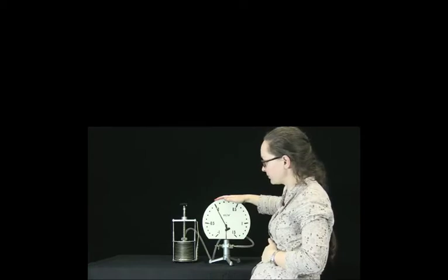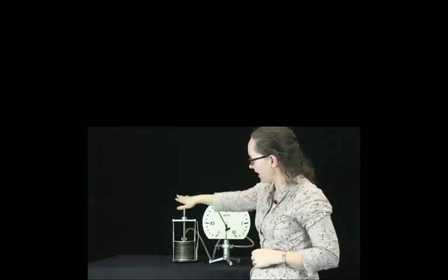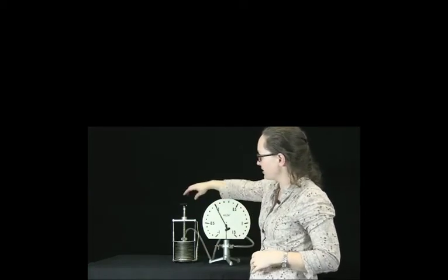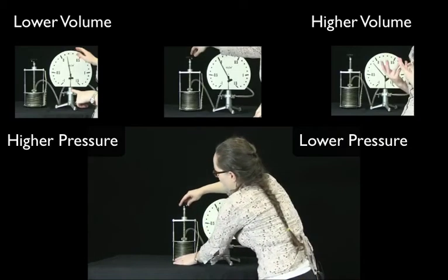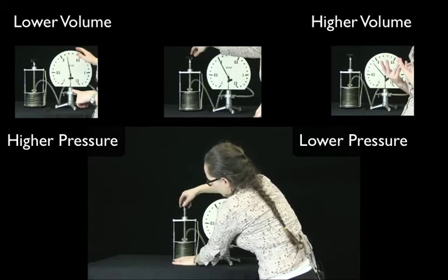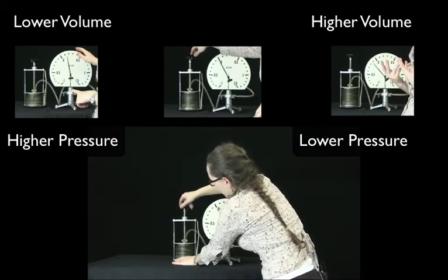Let's have a look at a demonstration of this law now. What I have here is a pressure gauge, which measures the pressure. And here I have a flask. And by turning the handle, I can change the volume of the flask. Let's have a look at what happens when we decrease the volume of the flask.